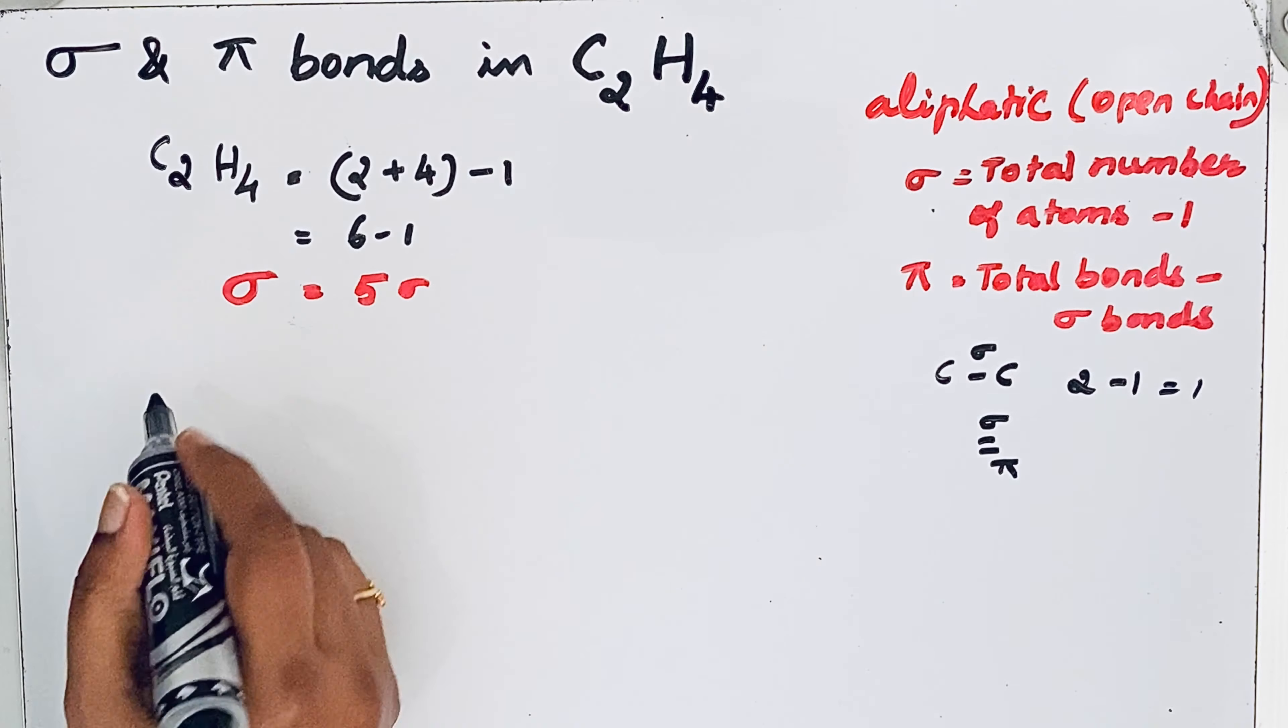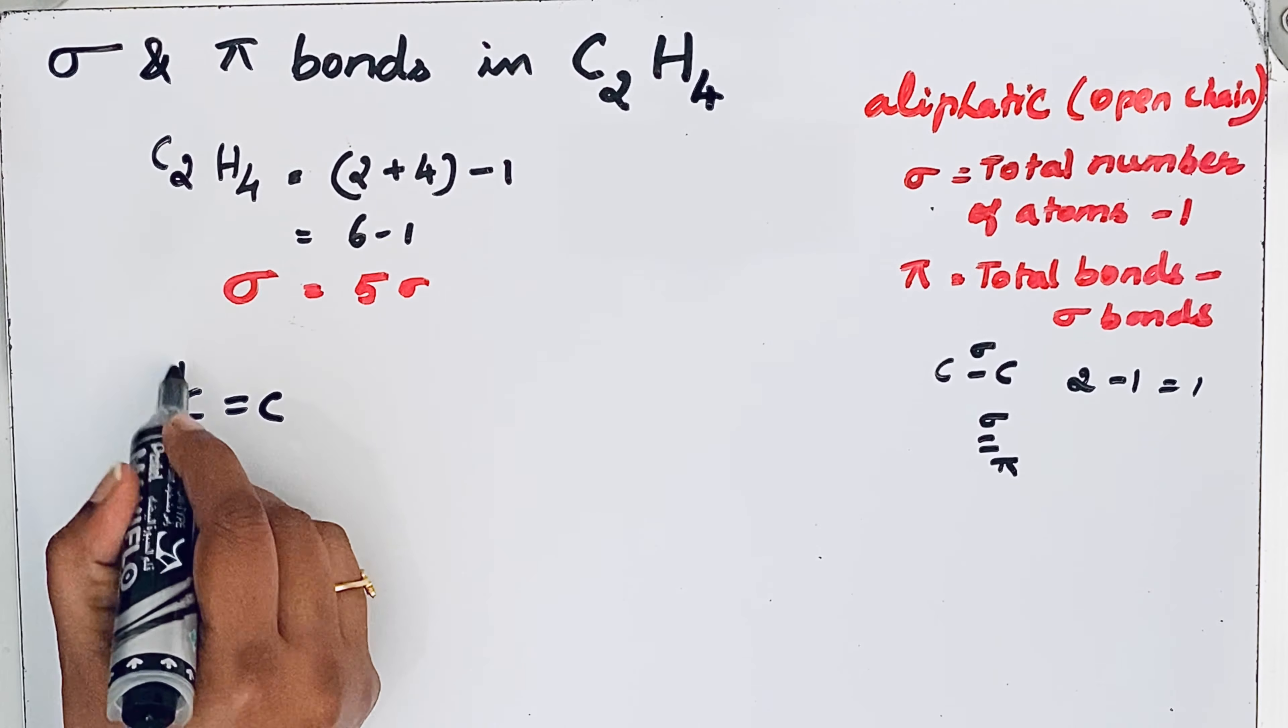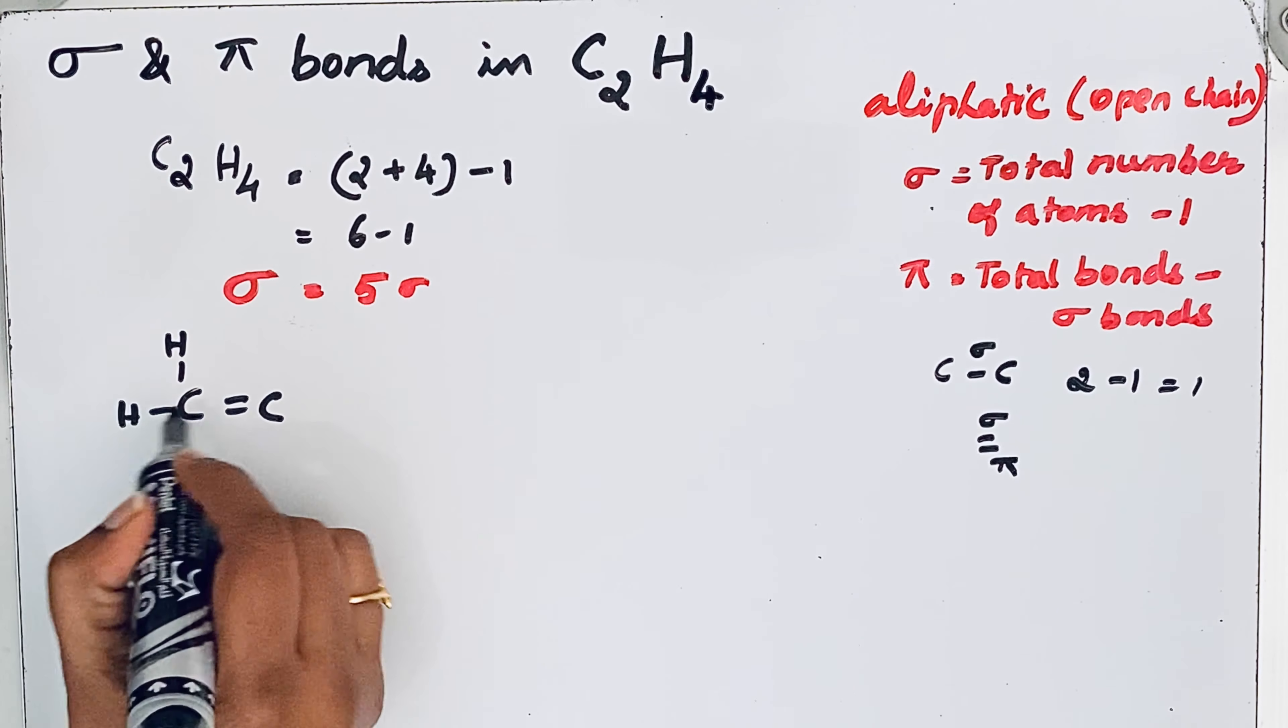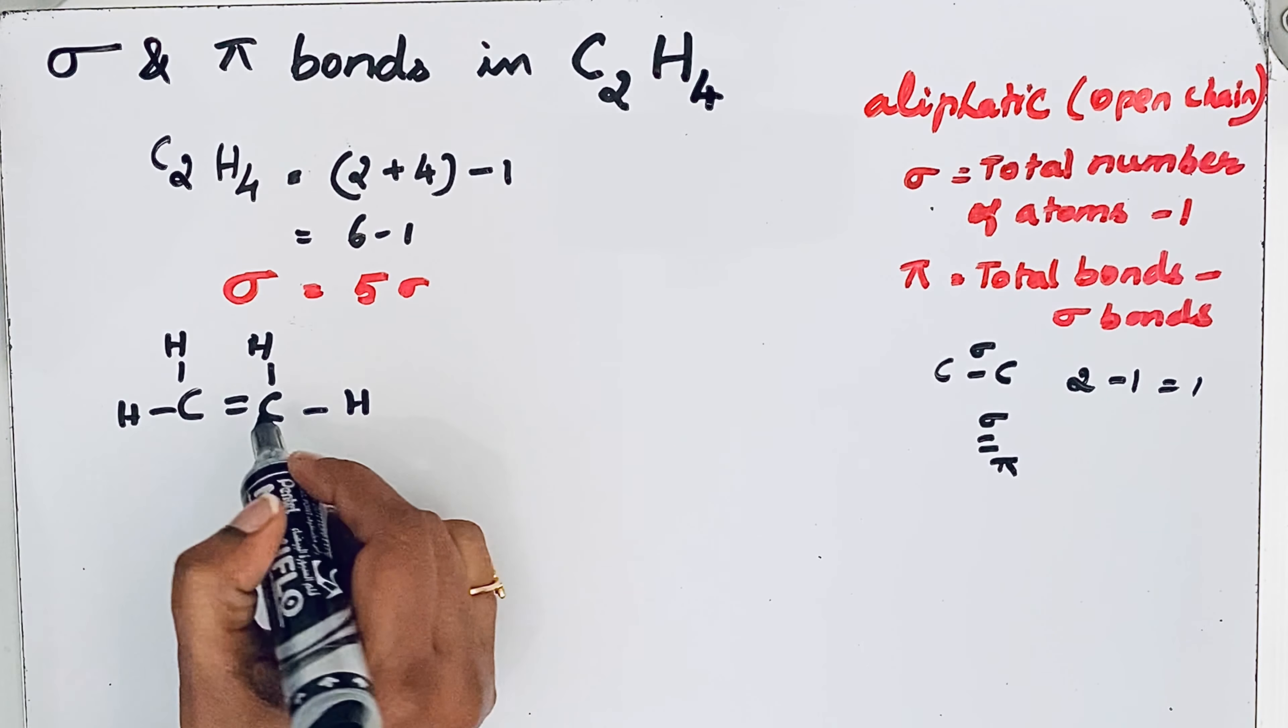So now we can write C double bond C, then 4 hydrogen atoms: 2 hydrogen atoms with one carbon and remaining 2 hydrogen atoms with another carbon.